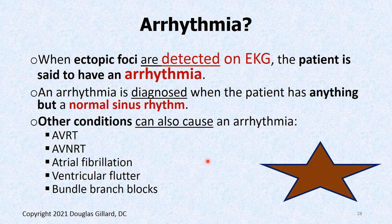What about the word arrhythmia? You have to do an EKG to make the diagnosis of arrhythmia. When ectopic foci are detected on EKG, you've got yourself an arrhythmia. Arrhythmia means your heart is running but not in sinus rhythm. Sinus rhythm means the sinoatrial node — the SA node — is the one pacing and running the heart. If the SA node ain't running the heart, you ain't in sinus rhythm.